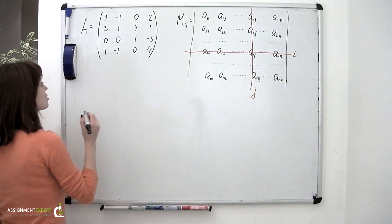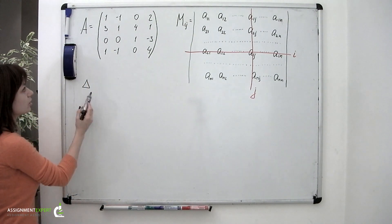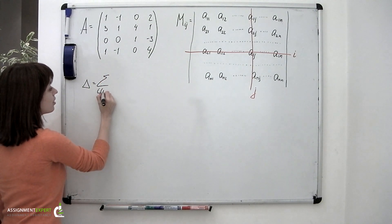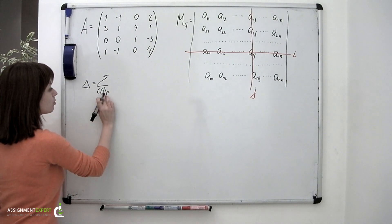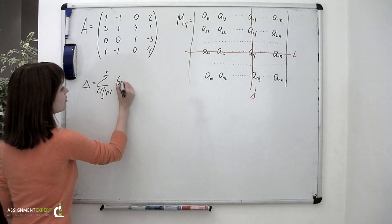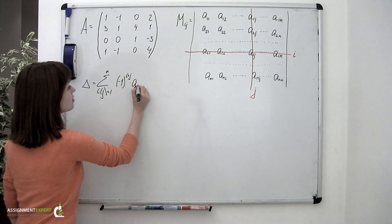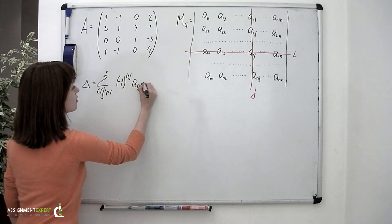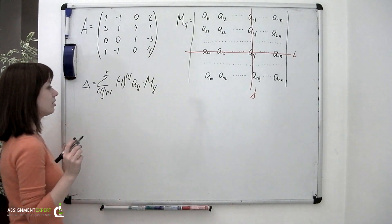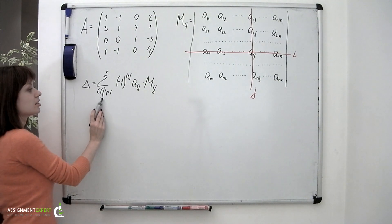Recall the formula allowing us to calculate the determinant of any size. It goes like this: Delta, which stands for determinant, equals the sum for i or j equal from 1 to n of negative 1 raised to the power of i plus j, times a sub ij times m sub ij. Here, i is the number of the row and j is the number of the column.